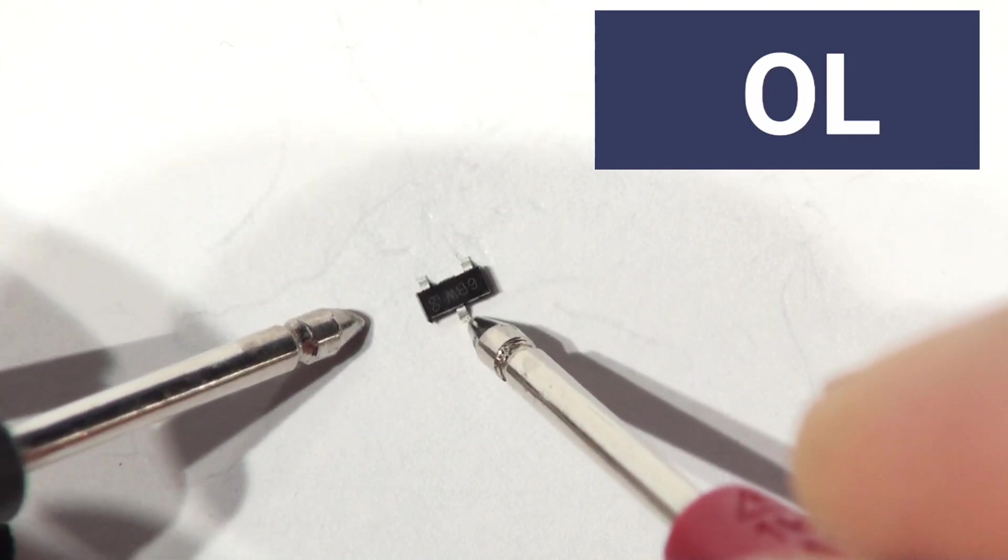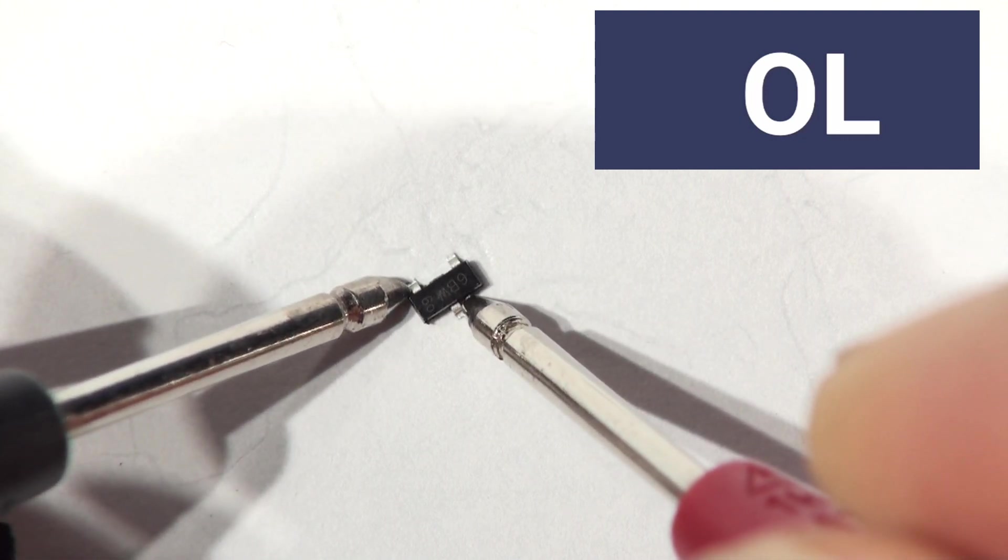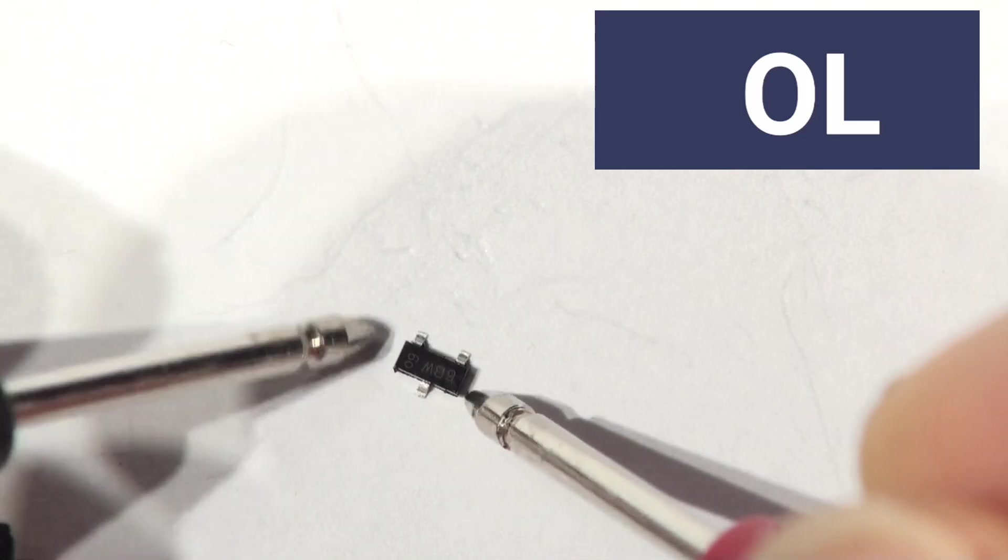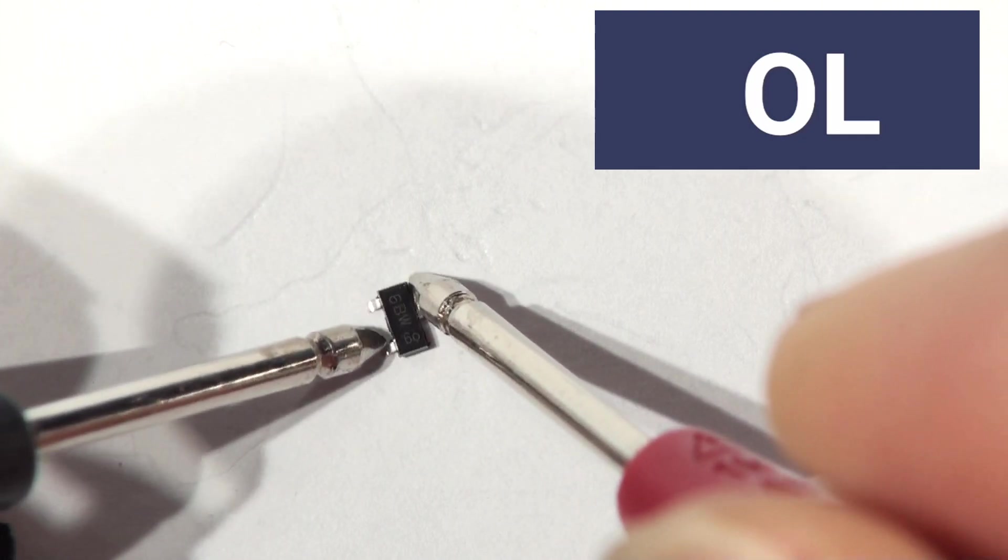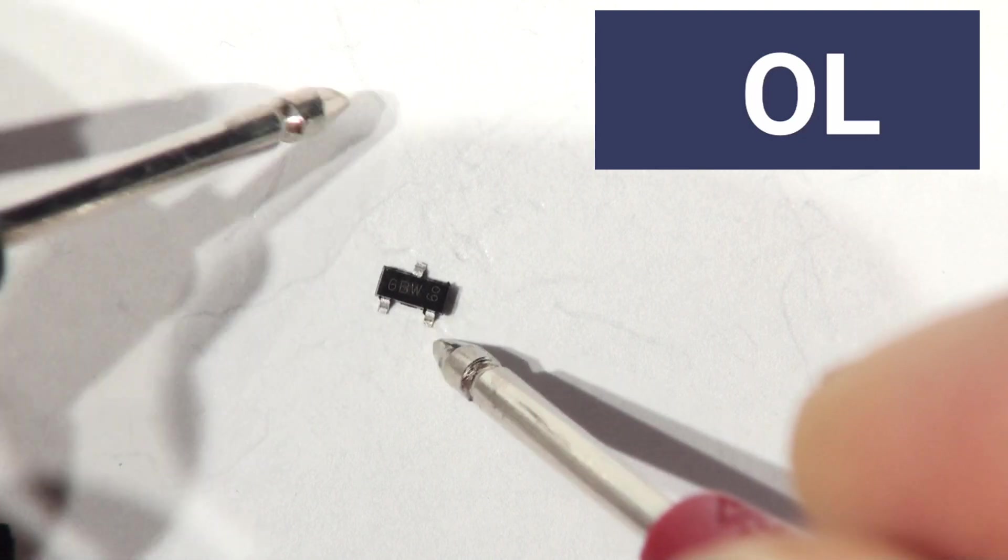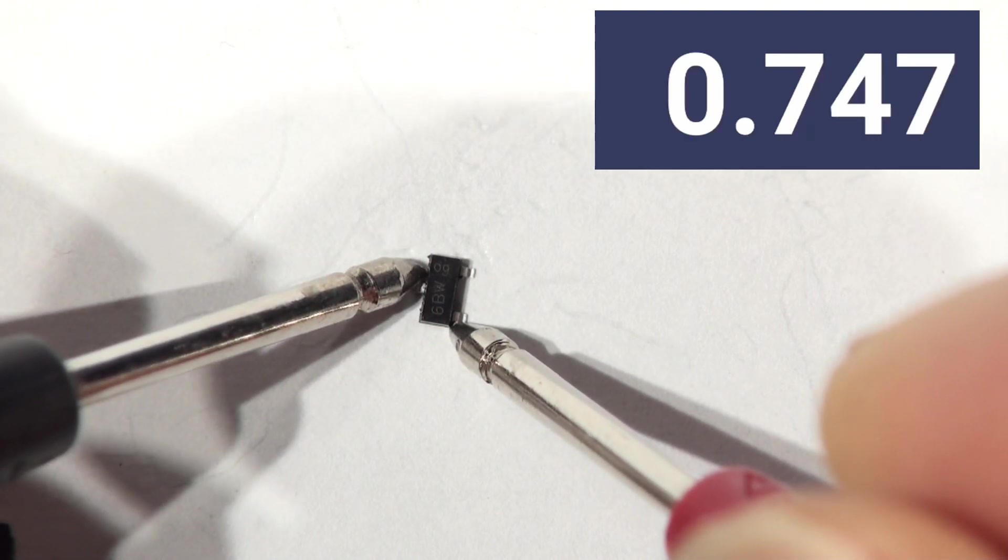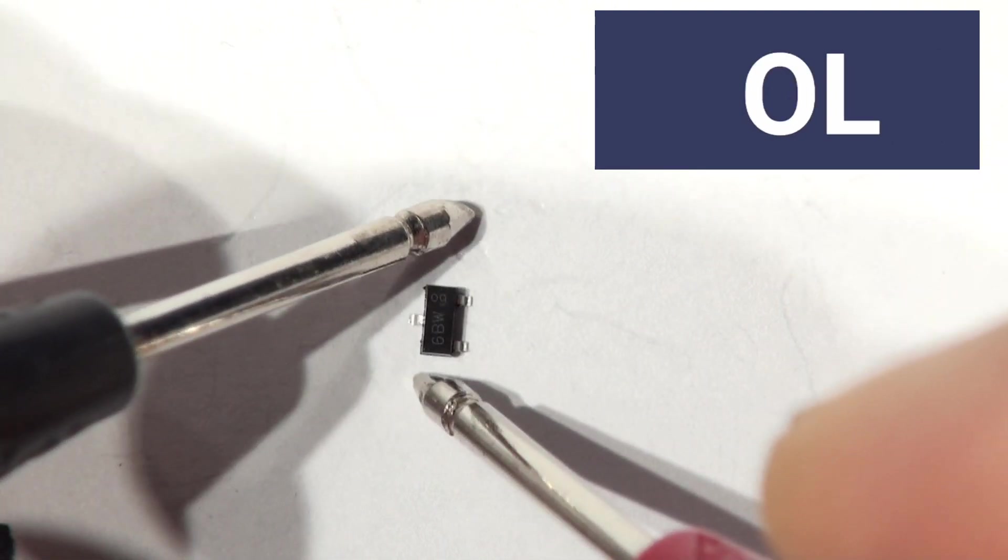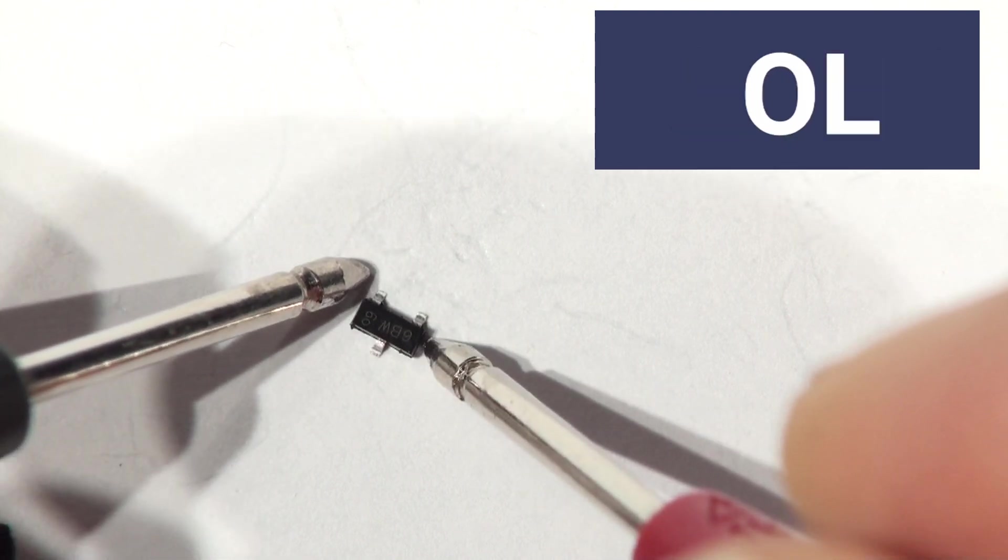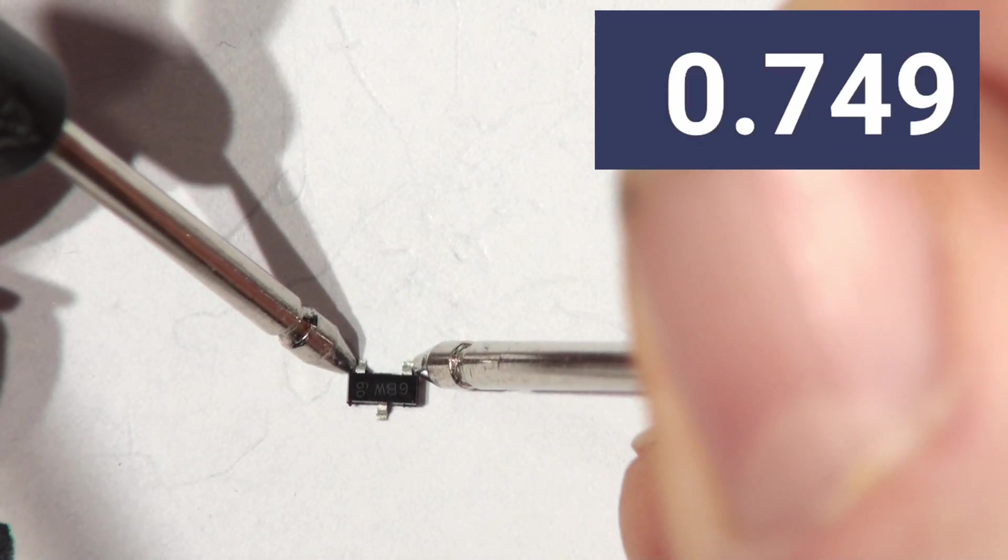And then looking at this one, which is going to be the NPN, because it was one of each. So we go the same way on here. Nothing at all. Nothing at all there, either. And if we swap over and put the positive lead on the what we now know is the base. Except I've got it round the wrong way. It must be that one. There you go. Positive lead on the base. We have 0.747. And so we know that this one is the base. And there's the other junction.